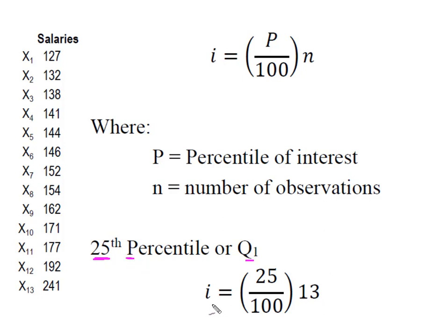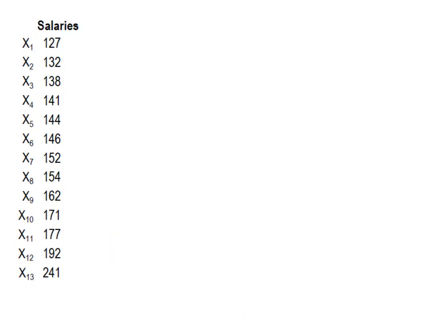So, we're going to calculate our index by taking i. We're going to divide 25 by 100. Multiply that by the number of observations we have to give us this index value. So, we were looking for our 25th percentile. So, we take the 25. Divide that by 100. Multiply that by our 13. And that comes out to 3.25.